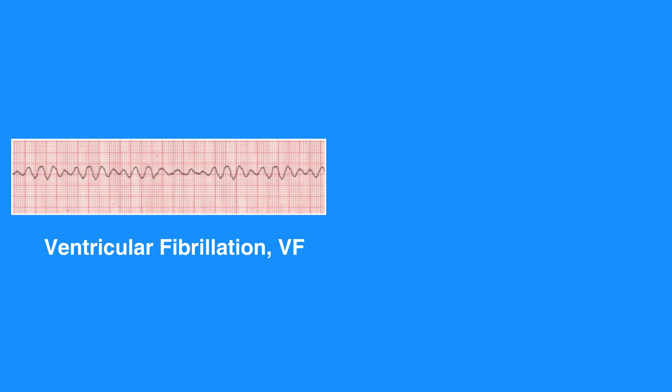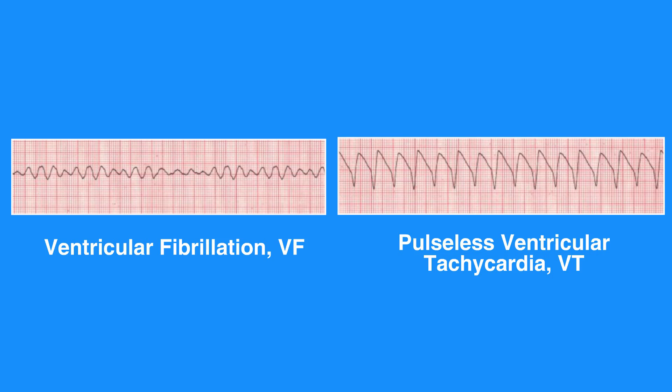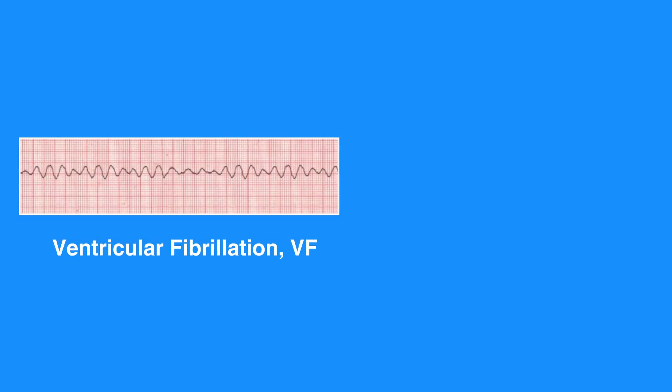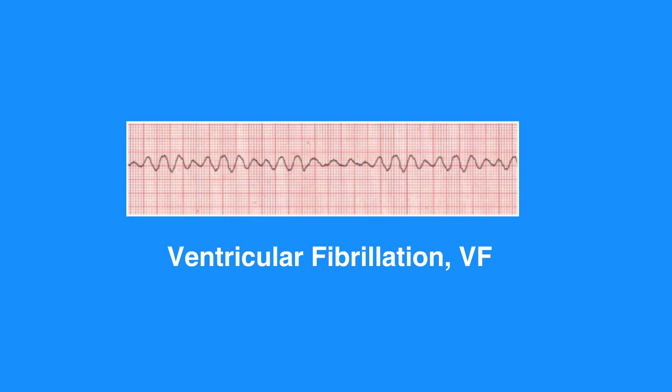Ventricular fibrillation, or VF, and pulseless ventricular tachycardia, or VT, are life-threatening cardiac rhythms that result in ineffective ventricular contractions. VF is a rapid quivering of the ventricular walls that prevents them from pumping, and the ventricular motion of VF is not synchronized with atrial contractions.